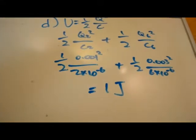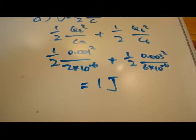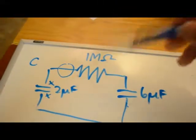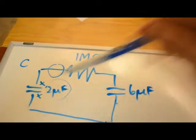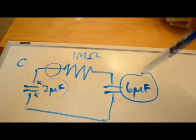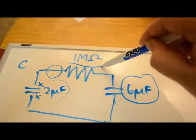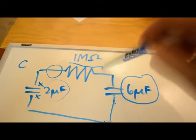The energy is less than part A because when this capacitor is charging this capacitor, energy is dissipated through the 1 megaohm resistor. So energy is lost as heat.